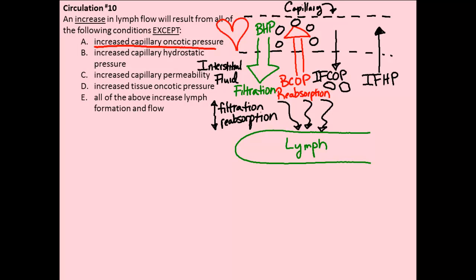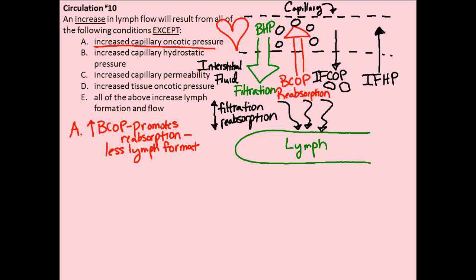For answer A, an increase in capillary oncotic pressure — which is just another term for blood colloid osmotic pressure. Looking at our diagram, an increase in blood colloid osmotic pressure promotes reabsorption. More fluid would be going back into the capillaries, so we would have less lymph formation. Since we're looking for a situation that decreases lymphatic flow, this appears to be the correct answer — but we'll verify the others.